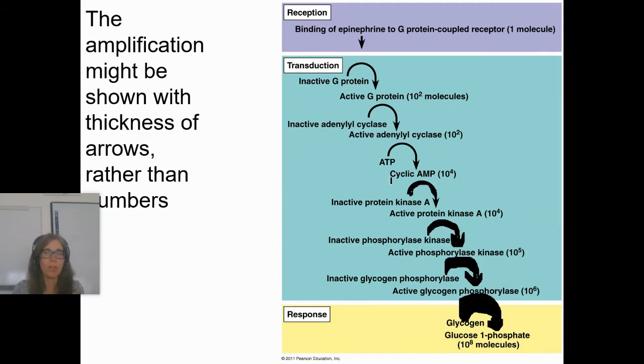What else can happen? Another way that they might show this instead of showing you just a single, a couple of things to pay attention in this amplification, you can look at the numbers, right? These numbers are increasing or sometimes they'll just show you, instead of showing you the numbers, they might just show you that the arrows are getting thicker.